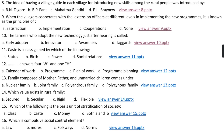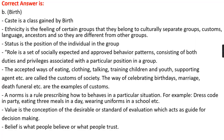Question number eleven: Caste is a class gained by which of the following? Option A, status; option B, birth; option C, power; option D, social relation. The right answer is option B, that is birth. Caste is a class gained by birth. Ethnicity is the feeling of a certain group that they belong to a culturally separate group based on custom, language, and ancestors. Status is a position of an individual in a group, while role is a set of socially expected and approved behavior patterns consisting of both duty and privilege associated with a particular position in a group.